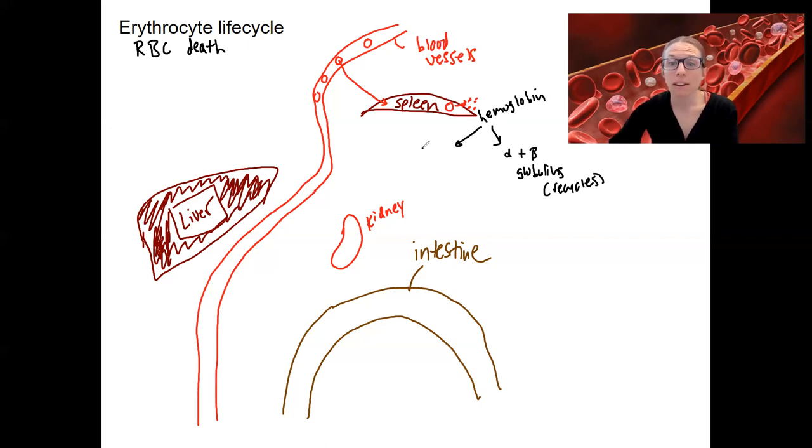And another big thing is heme. Heme is composed of iron and also the heme itself. Iron can be within the spleen taken back in, it binds to a plasma protein transferrin and is taken back up and recycled.